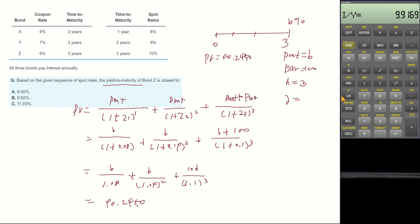Present value is 90.2450 negative as present value, future value is 100, frequency is 3, and payment is 6. Compute, and then return becomes 9.92%.